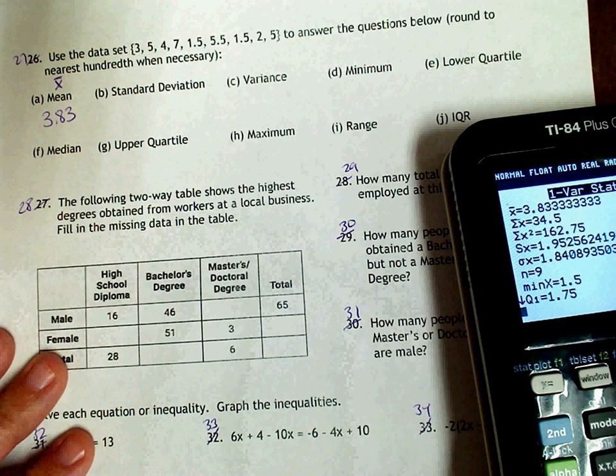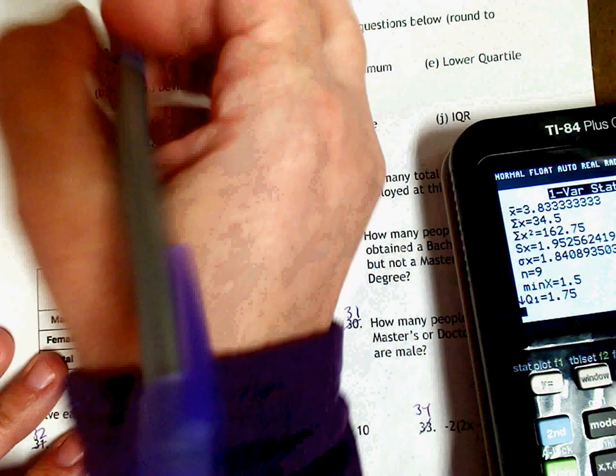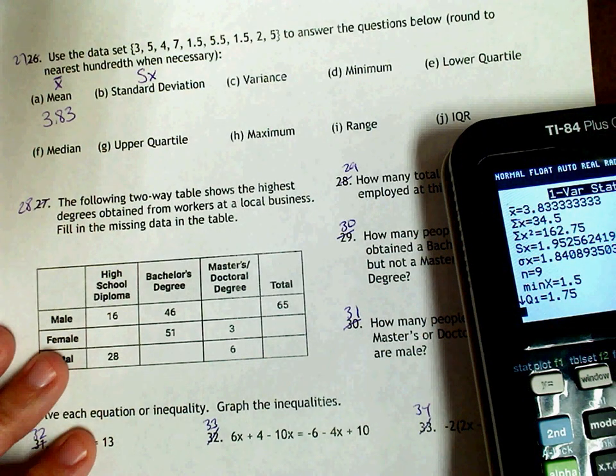Alright, the standard deviation is the one with the S in front of the X. So I will put that up here, S in front of the X. And that is 1.95.